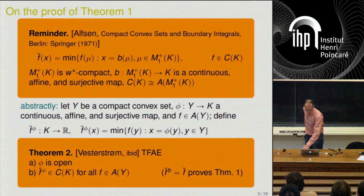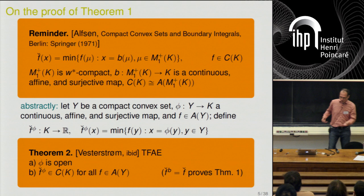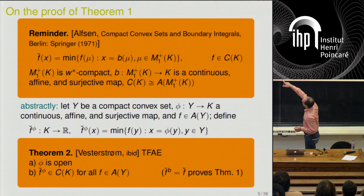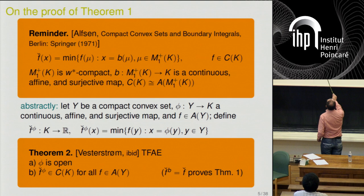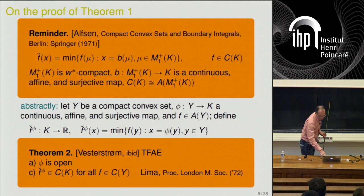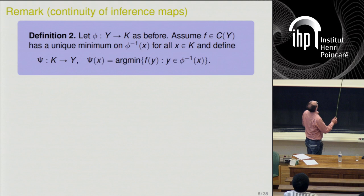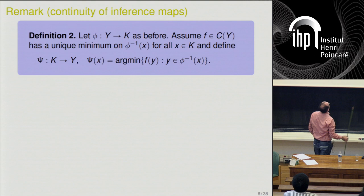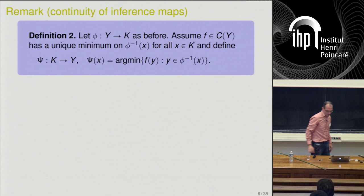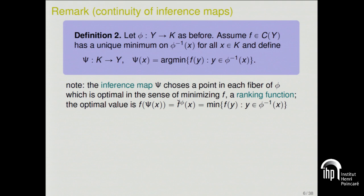This abstract function is nothing but the lower envelope, so we have proved the theorem in that setting. Lima generalized the theorem even to continuous functions on a compact set. We are in the setting of inference: we can look at the fibers of phi and minimize on them. Assuming each fiber has a unique minimum, we have already found a right inverse to the affine map which defines the fibers — an inference map which works by a ranking function that should be minimized. Using Lima's result, this inference map must be continuous if and only if the fiber-defining map phi is open.